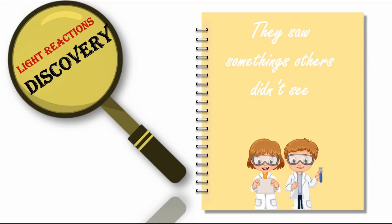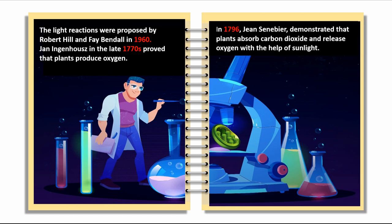Light Reactions Discovery. They saw something others didn't see. The light reactions were proposed by Robert Hill and Faye Bendall in 1960. John Ingenhousz in the late 1770s proved that plants produce oxygen. In 1796, Jean Senebier demonstrated that plants absorb carbon dioxide and release oxygen with the help of sunlight.